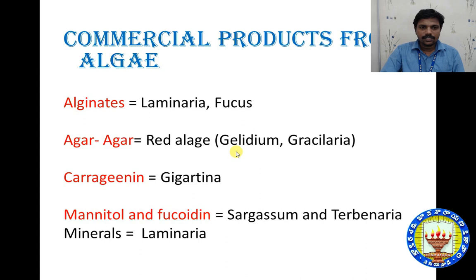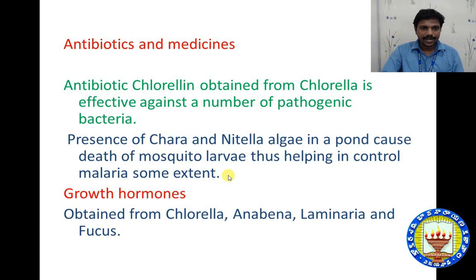Commercial products obtained from algae include alginates from Laminaria and Fucus species; agar-agar from Gelidium and Gracilaria; carrageenan from Gigartina; and mannitol from Sargassum and Laminaria. Mannitol is a carbohydrate source — it is a polysaccharide. Minerals are also derived from some Laminaria species.